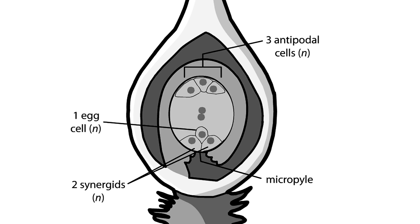Finally, two nuclei called polar nuclei remain together in one large central cell. The egg cell and the single cell with two polar nuclei will eventually take part in the double fertilization event.